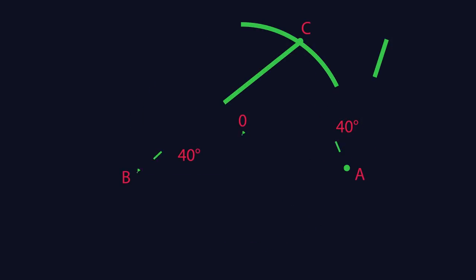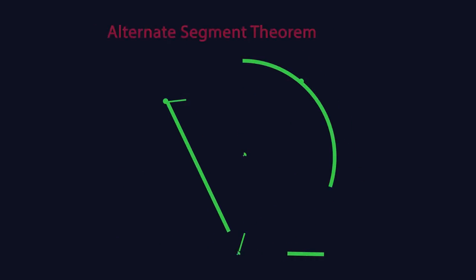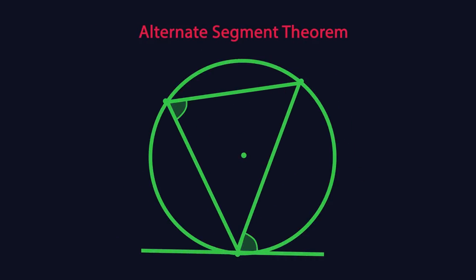This theorem is known as the alternate segment theorem. The angle between a tangent and a chord is equal to the angle in the alternate segment.